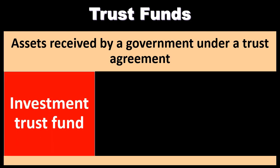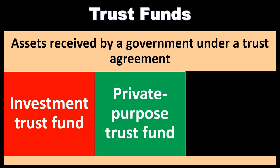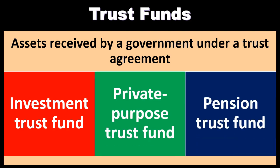Assets received by a government under a trust agreement can fall into three categories: investment trust funds, private purpose trust funds, and pension trust funds. The concept of trust funds can be a little confusing, and there could be some overlapping thought process between trust funds and other types of funds, such as governmental type funds.